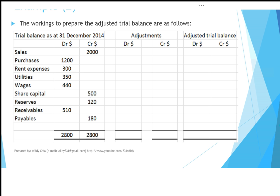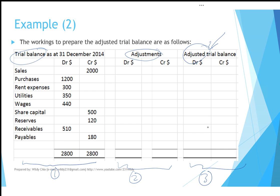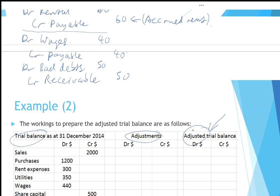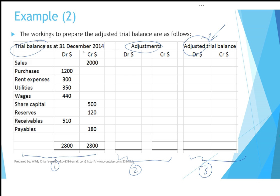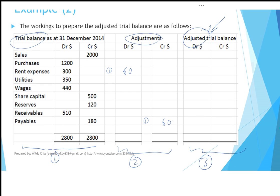We will need some workings to prepare and find out what the final adjusted trial balance is. The worksheet is broken down into: first, the original trial balance without adjustments, taken straight from the question; then two columns for adjustments; and finally the adjusted trial balance columns. With whatever adjustments take place, you get the final adjusted trial balance — and this is what we want to achieve. The first adjustment: rental of 60, so debit rental by 60 and credit payable by 60. Next, wages 40 payable: debit wages 40, credit payable 40.